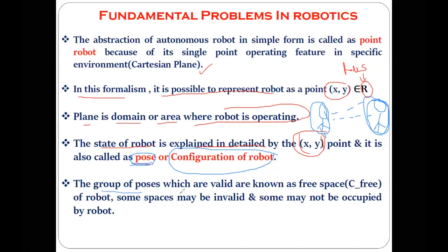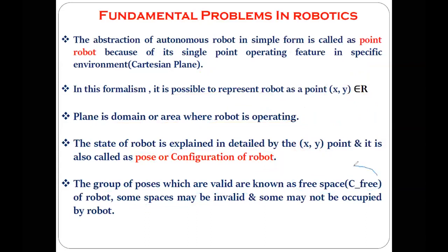The group of poses or configurations of the robot that are valid are referred to as the free space. The group of positions which are valid are considered as the free space of the robot. There can be some spaces that are considered invalid, and some spaces may not be occupied by the robot. The free space is represented here as C underscore free. So the valid positions are the ones referred to as free spaces.